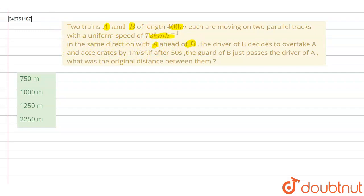So let us draw the diagram up till here. This is the first train, and this will be the second train. It is given that A is ahead of B, so this will be A and this will be train B.